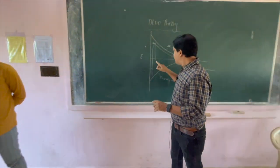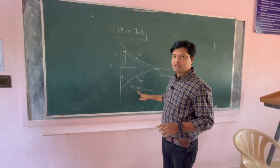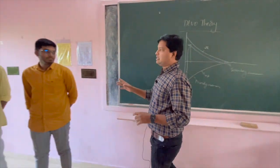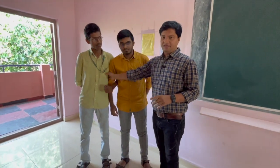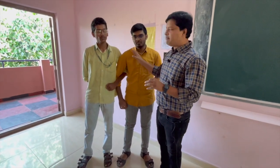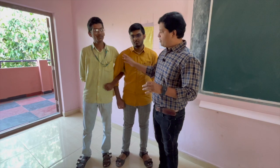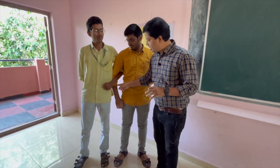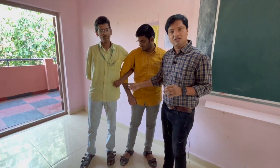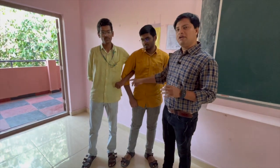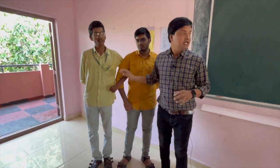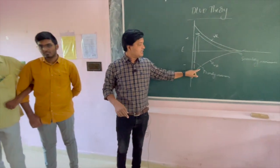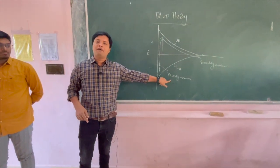First, we start with the primary minimum. The colloids are very close to each other, and there are no electrolytes added. Because they are very close to each other, their orbitals — assume these hands as orbitals — their orbitals will overlap and they form a hard cake. That is the sign of instability. It is called primary minimum.